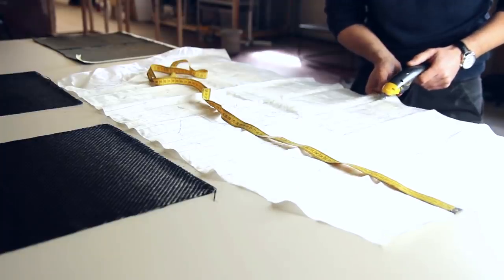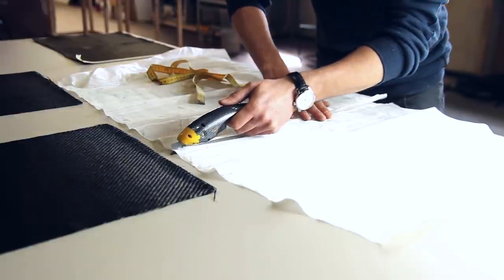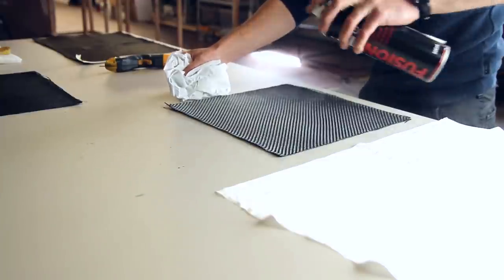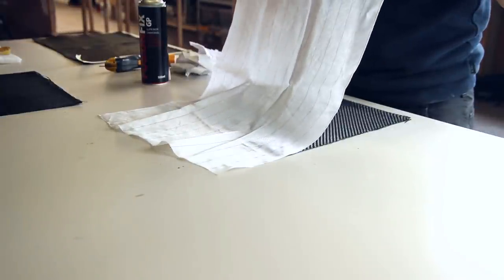Here I'm preparing everything for the first plate using the traditional technique, making the peel ply ready and applying it with a light.